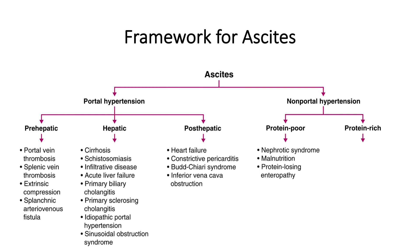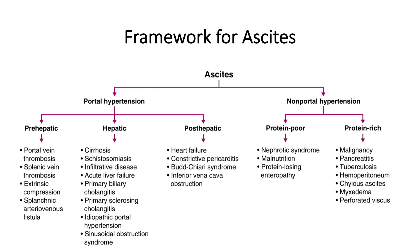In patients without portal hypertension, protein-poor ascitic fluid is caused by hypoalbuminemia. When albumin is low, the decrease in oncotic force within the capillary space allows fluid to leak out into third spaces in the body, including the peritoneal cavity. Causes of hypoalbuminemia include nephrotic syndrome, malnutrition, and protein-losing enteropathy. On the other hand, protein-rich ascitic fluid represents increased oncotic force within the peritoneum. Causes include malignancy, pancreatitis, and tuberculosis.